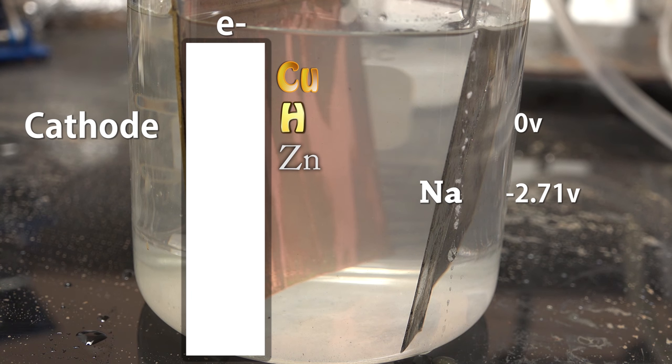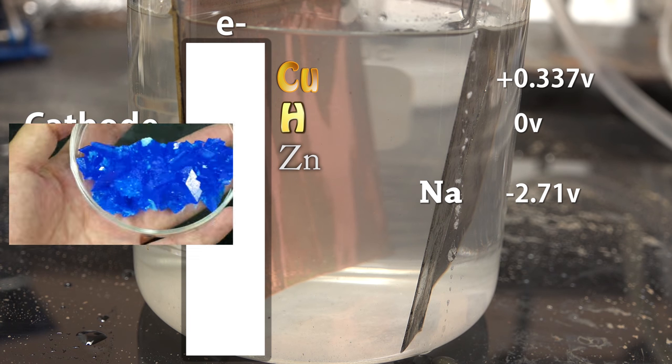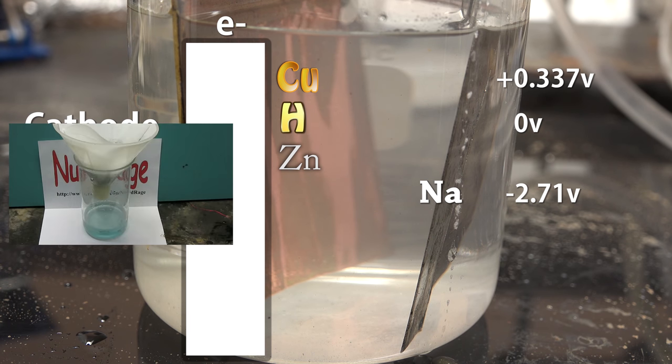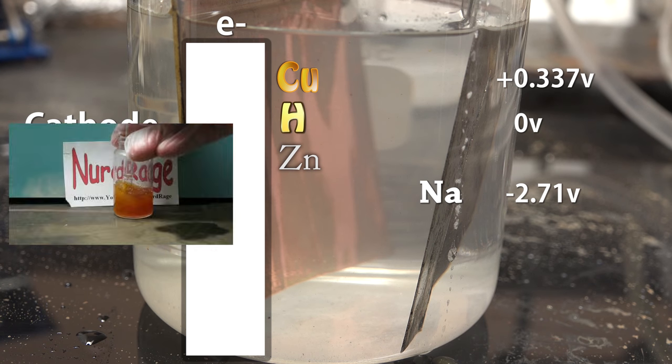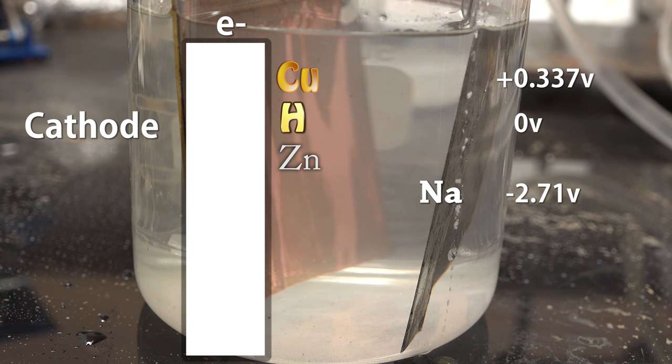Copper on the other hand lies at plus 0.337 volts, so it's very easy to deposit out of solution. That is actually the basis for my video on making sulfuric acid from copper sulfate. Now where does zinc lie? It's around minus 0.76 volts.